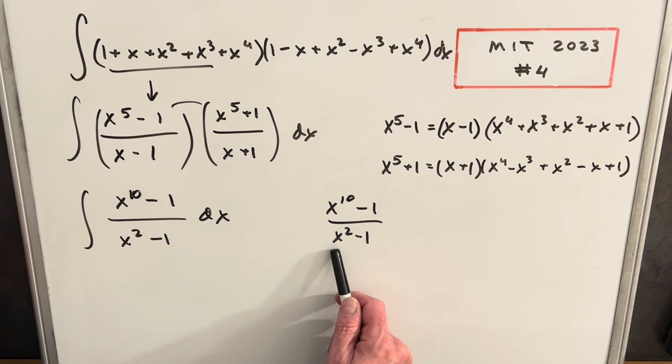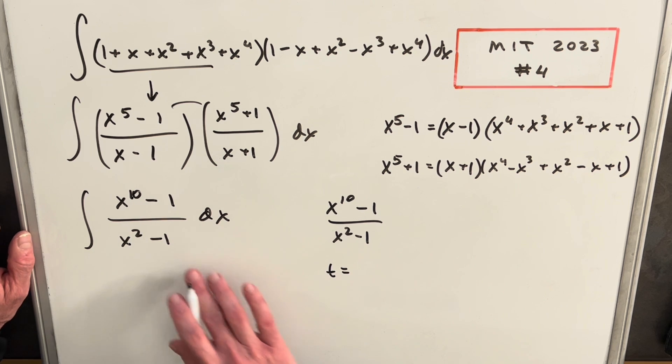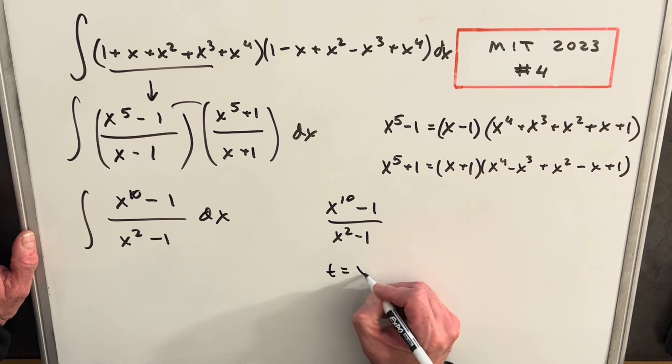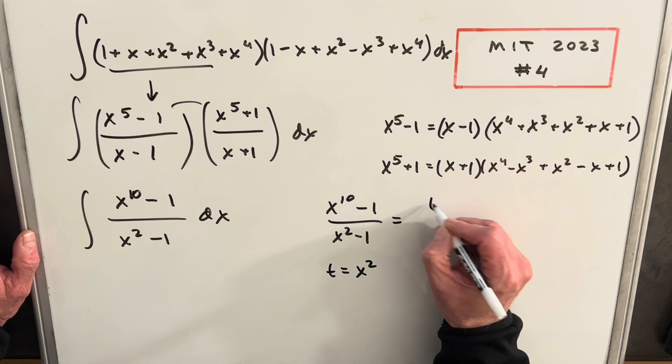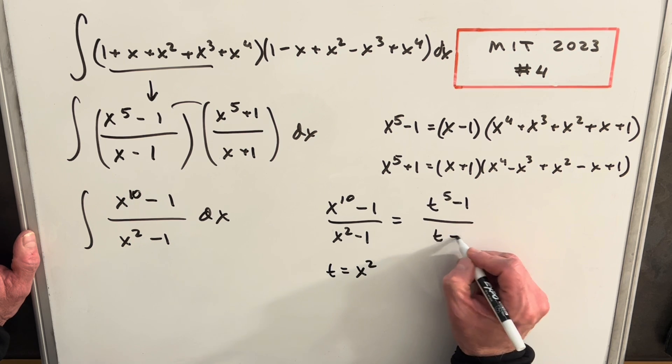Okay, so looking at this and noticing that both our powers are even, I'm going to do like a little substitution—just algebra, not doing anything, we're not doing an integral substitution. So if I call my t = x², I can rewrite this as (t⁵ - 1)/(t - 1).